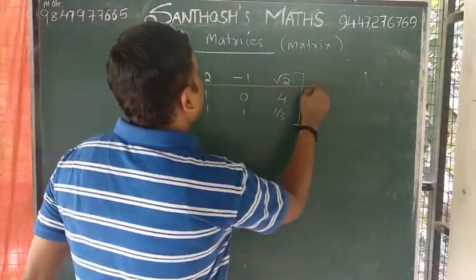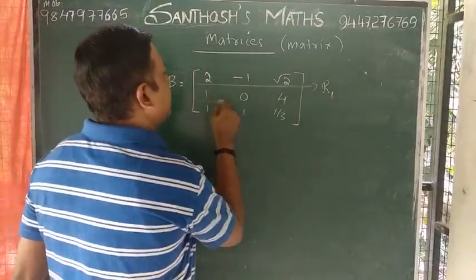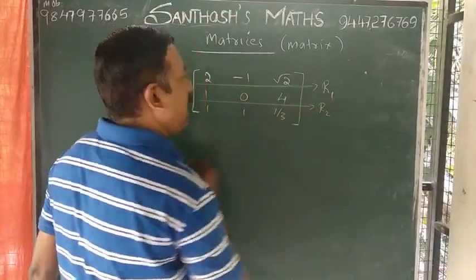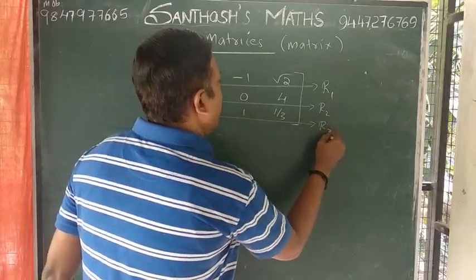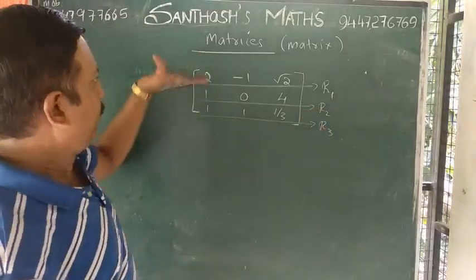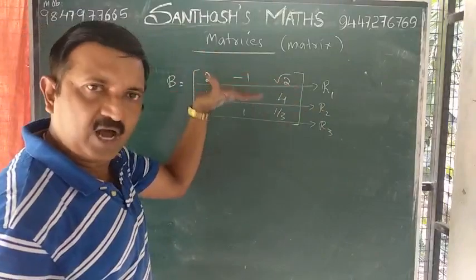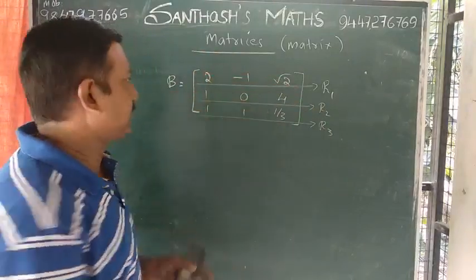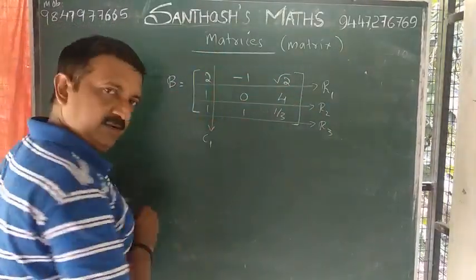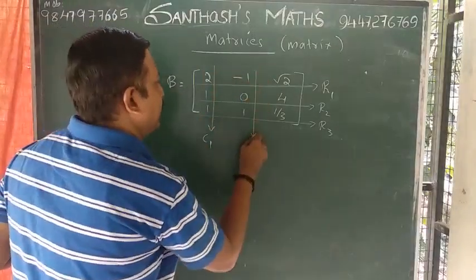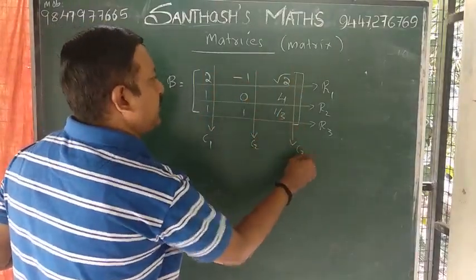Here is R1, here is the first row. Here is the second row, R2. Here is the third row, R3. First row, second row, third row: R1, R2, R3. First column we have C1. Second column we have C2. Third column we have C3.